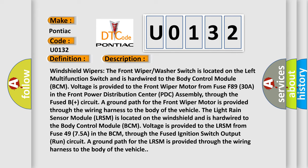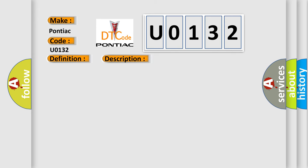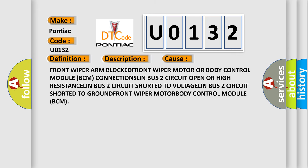This diagnostic error occurs most often in these cases: front wiper arm blocked, front wiper motor or body control module (BCM) connections, BUS 2 circuit shorted to voltage, BUS 2 circuit shorted to ground, or front wiper motor to body control module (BCM) wiring issues.